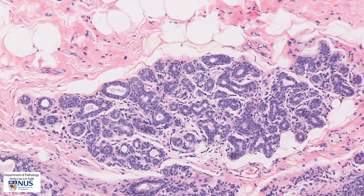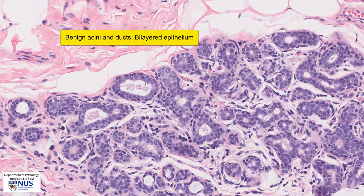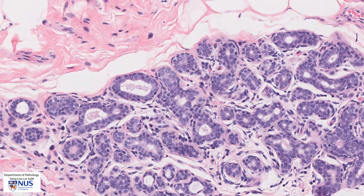A very useful point to note is that when you look at benign breast tissue, the acini as well as the ducts are lined by bilayered or double-layered epithelium, with the inner luminal layer and the outer myoepithelial layer. This is a very useful clue that you are looking at benign breast parenchyma, because in breast carcinoma the lining of the malignant glands is a single-layer lining.